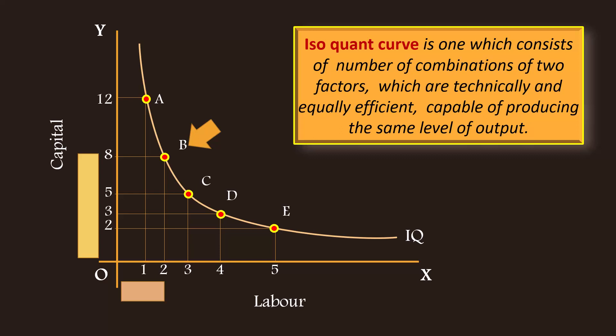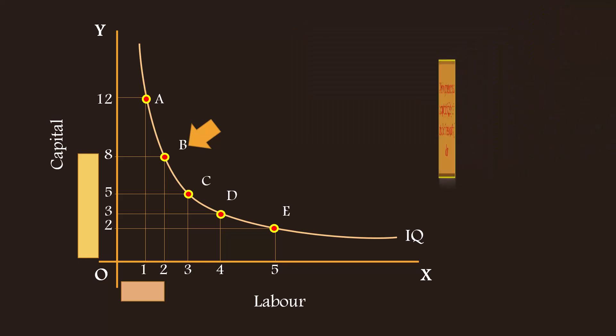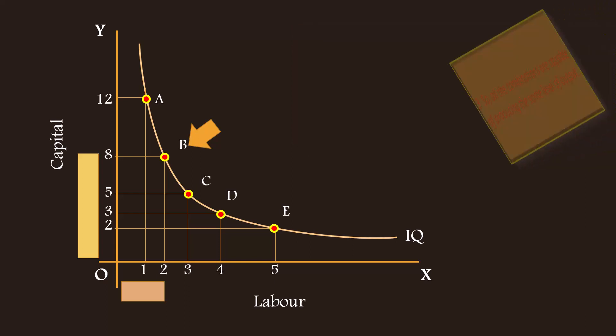Ok, now the finer points. One, there are a number of combinations of labor and capital on an isoquant. Two, drop in output due to decrease in the quantity of capital is offset by a rise in output due to increase in quantity of labor.